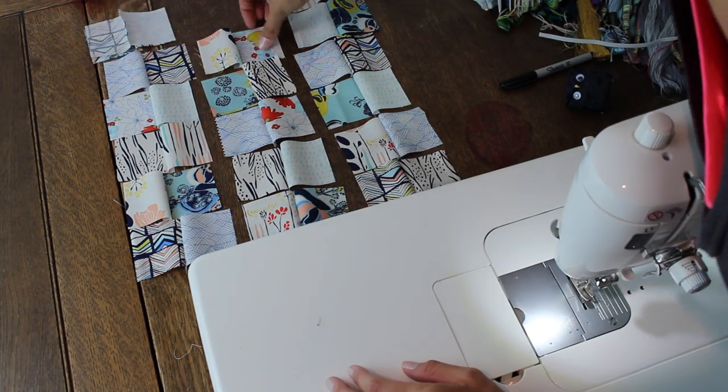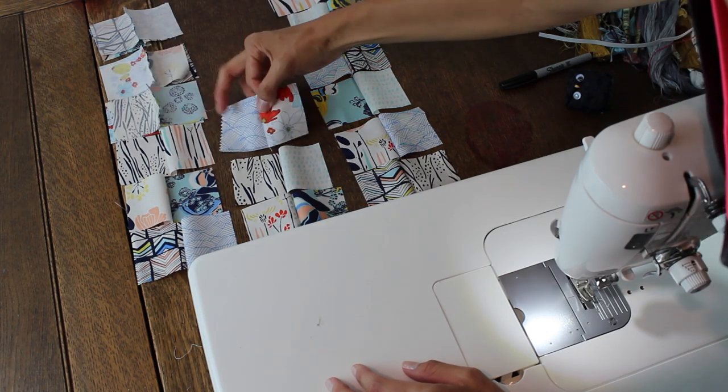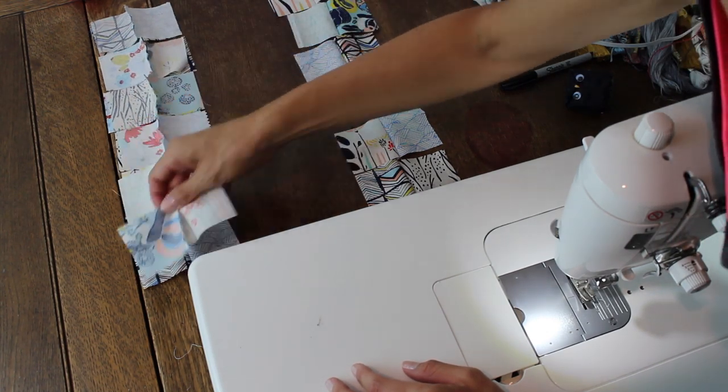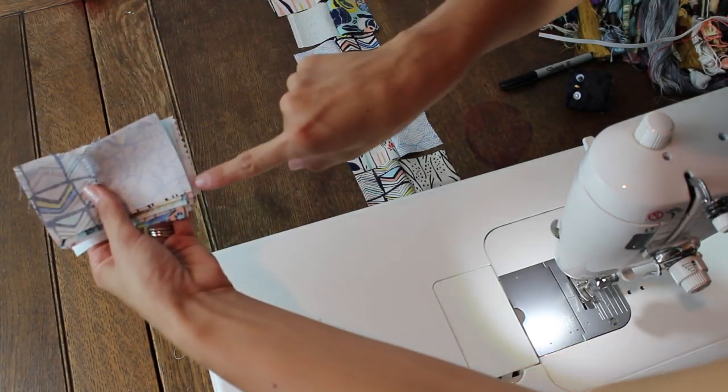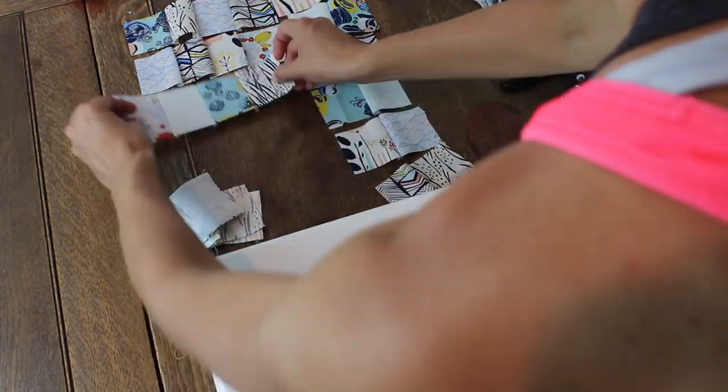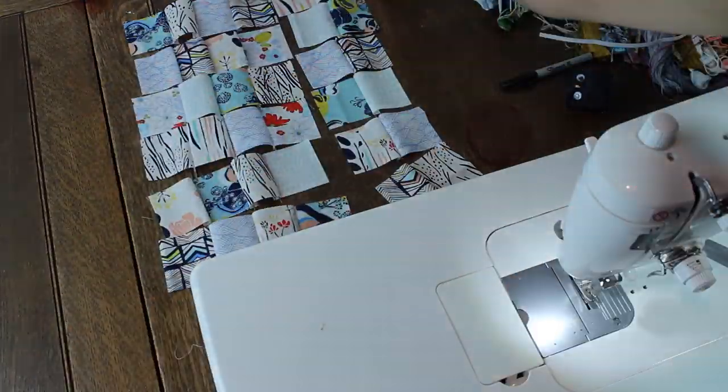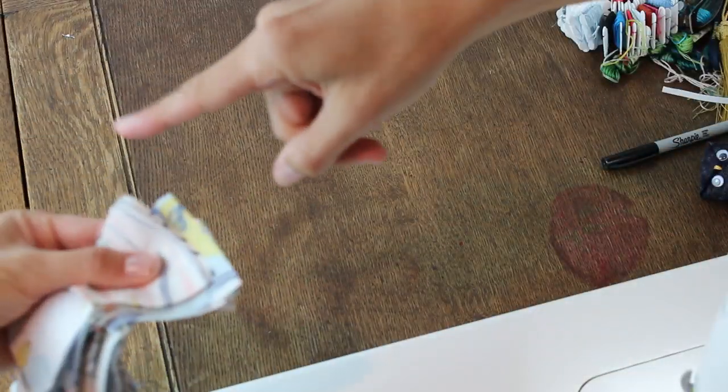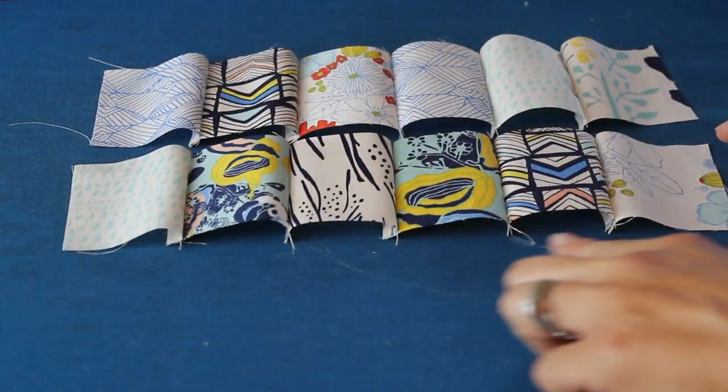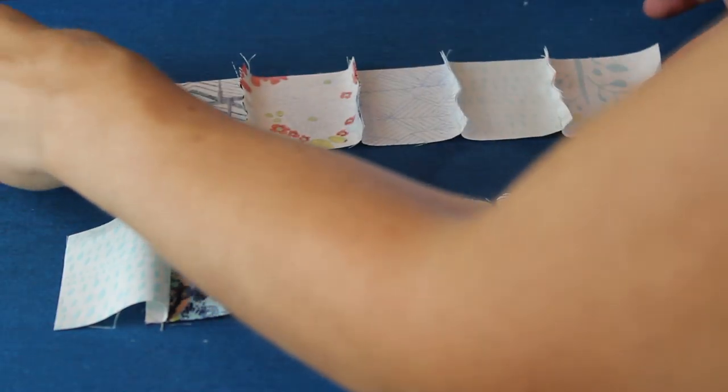Now what we're going to do is take those two columns and place them right sides together and stitch down this side in order to create our finished rows. So go ahead and keep working on this. However it works best for you, do it that way. This is just how I like to organize my patchwork when I'm creating these things. Now I have my rows complete.